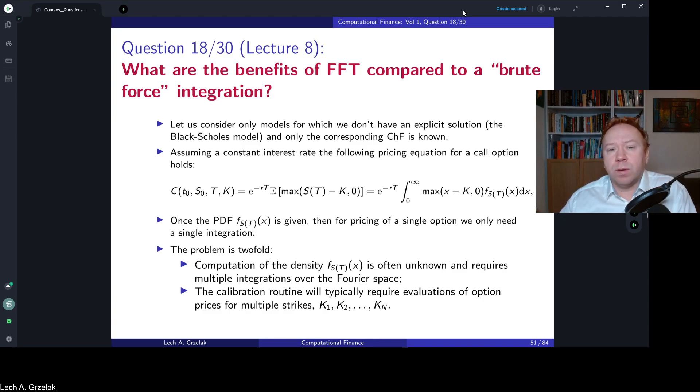Here we are very much concentrated on pricing of derivatives, so by FFT the question means Fourier transforms for pricing of options, for example methods based on Carr-Madan's approach or the COS method. What are the benefits? Do we actually always need those methods to price options?